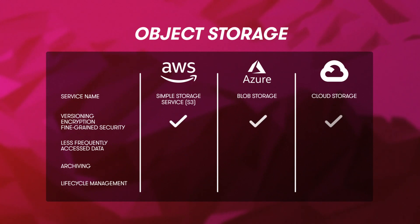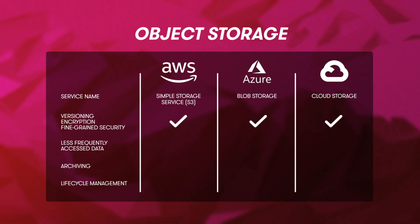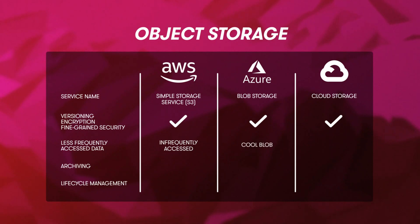Beyond naming, all the storage services have way more in common than they have differences. They all offer versioning, encryption at rest, and fine-grained security, including options to make your object publicly accessible or completely private. They also offer different tiers of storage classes — the more performant and redundant the storage class, the more you pay. All the object storage services also offer options to pay less for less frequently accessed data: AWS has their Infrequently Accessed storage class, Azure calls it the Cool Tier Blob Storage, and GCP has Nearline and Coldline storage classes.